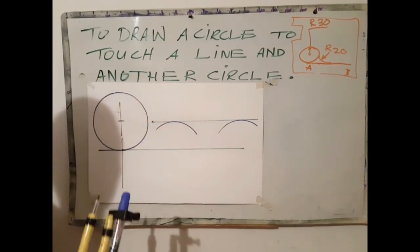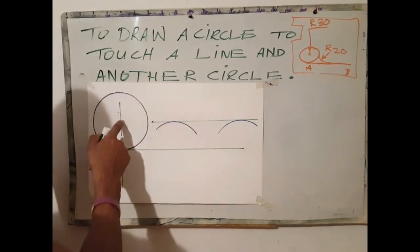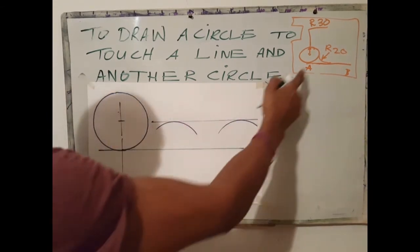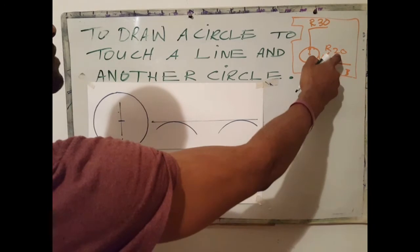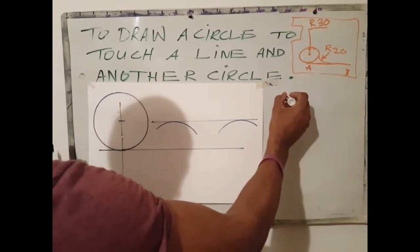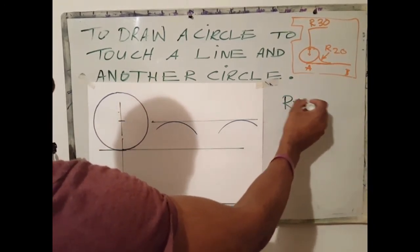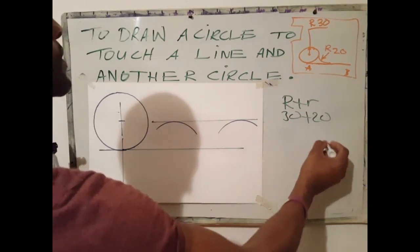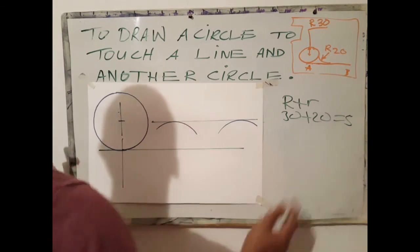The next step is to add both radii, the radius of this circle and the radius of the blending circle. In this case we have R plus Rc, 30 plus 20 gives us 50.